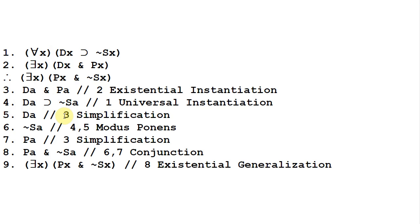Now that we have those two premises, we use simplification on line 3 to get 'DA,' because we need DA for a modus ponens to get 'not SA' from line 4. So using modus ponens on lines 4 and 5, we get 'not SA.' Looking at the conclusion, we want 'PA and not SA,' which we can then use with existential generalization. We also get 'PA' from line 3 by simplification on line 7. Now that we have PA and not SA on separate lines, we join them together on line 8 to get 'PA and not SA.'